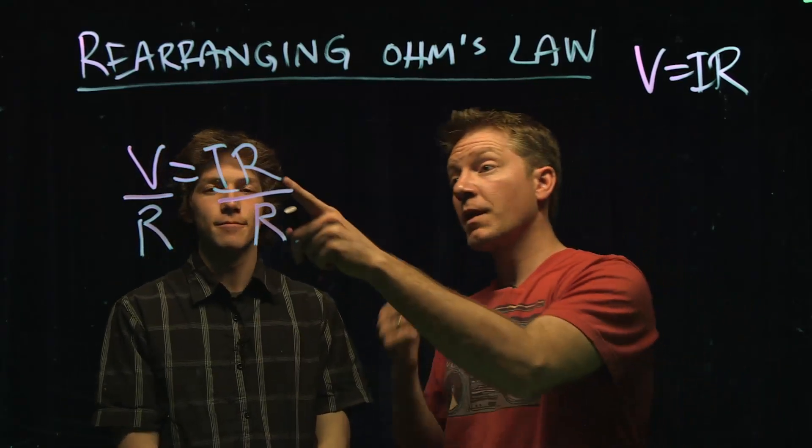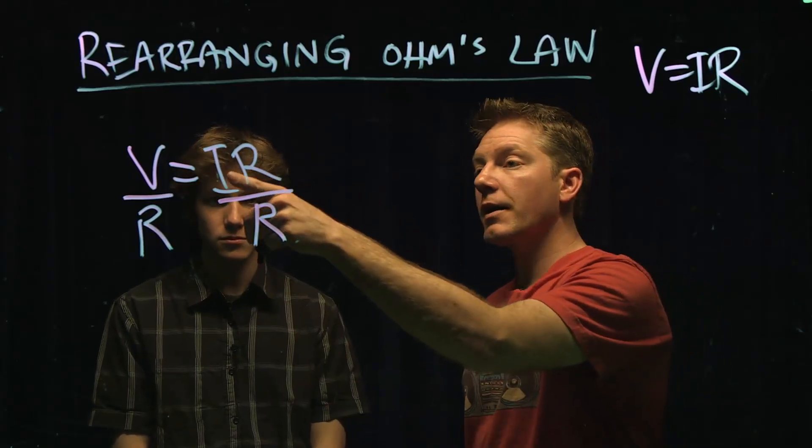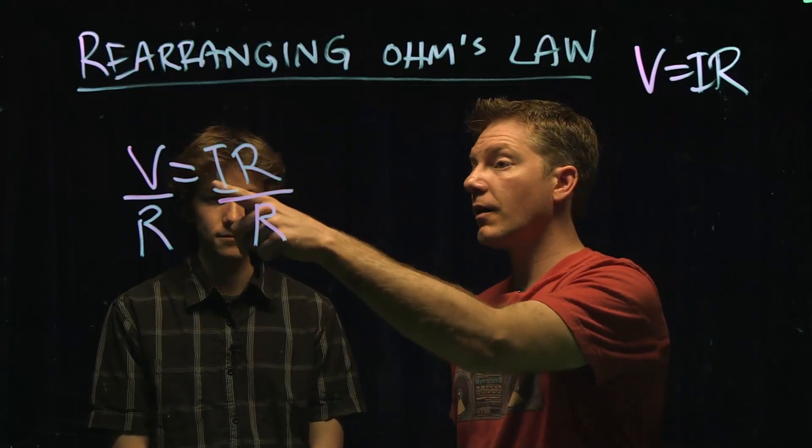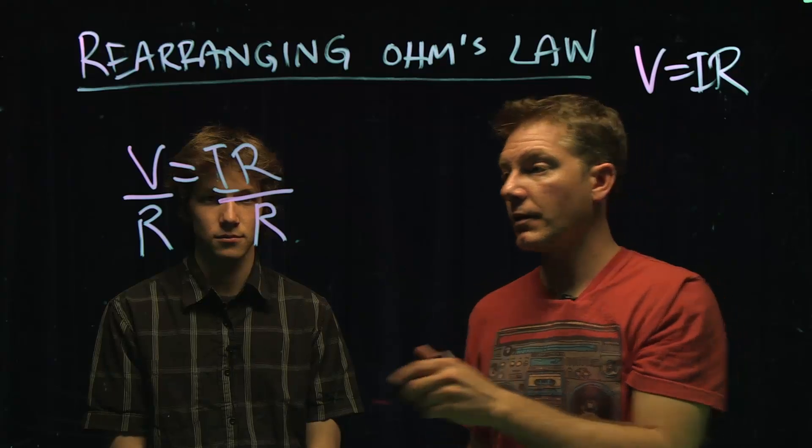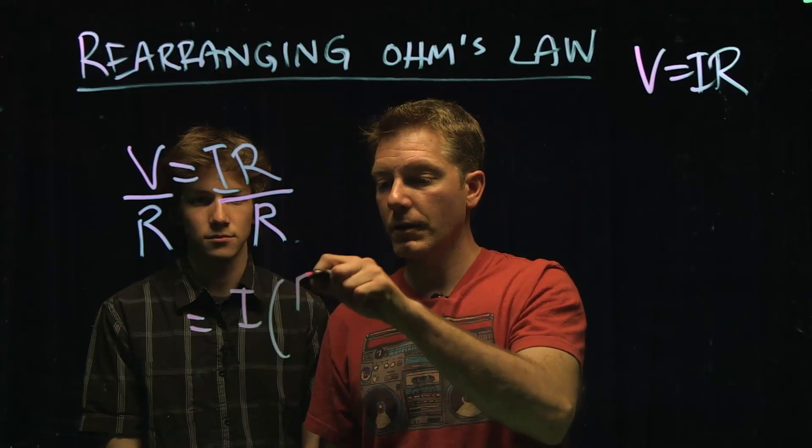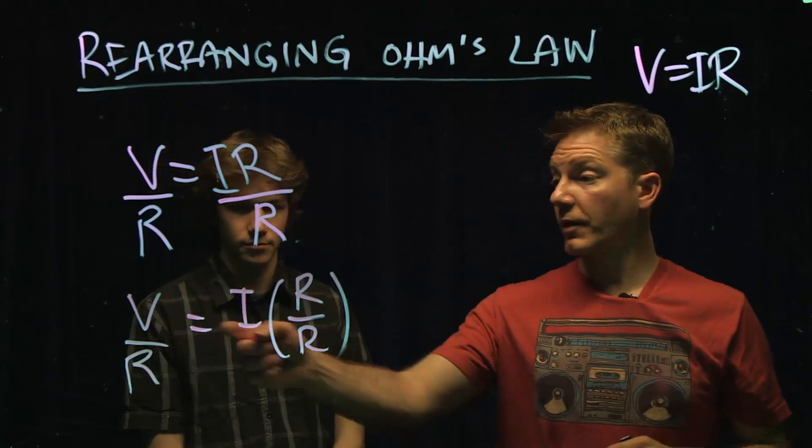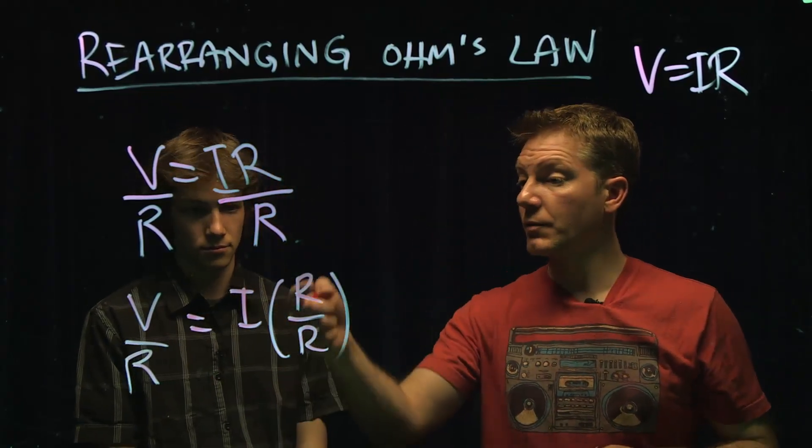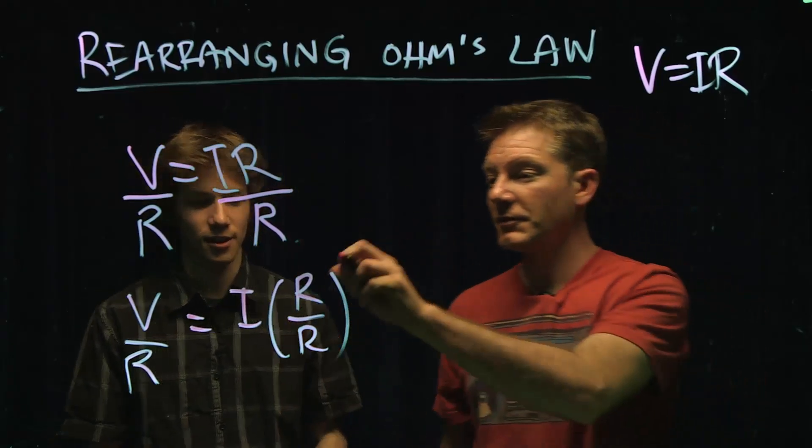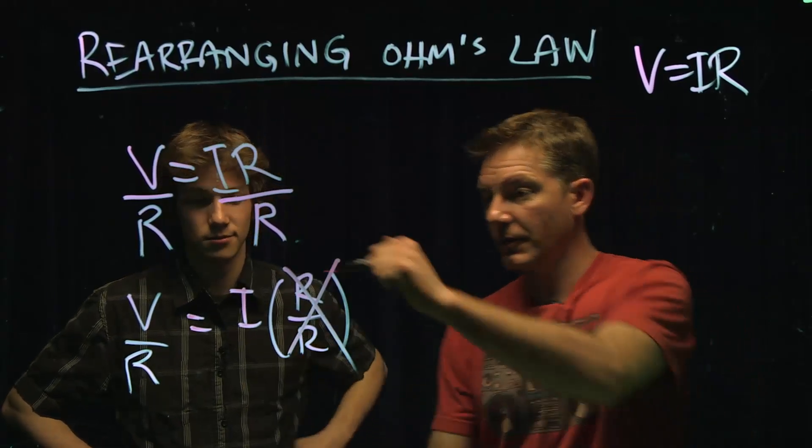Yes. So this is V over R, which is fine. Then we have I times R over R. This is actually I times R over R. So we have V over R equals I times that. But R over R is equal to? 1. So get that out of there because I times 1 is equal to? I. Yeah. Okay.